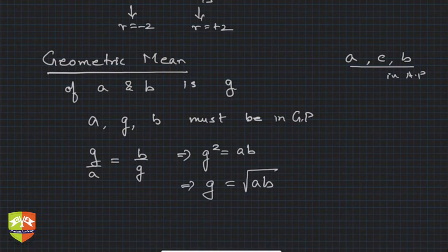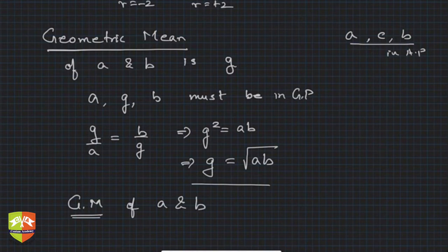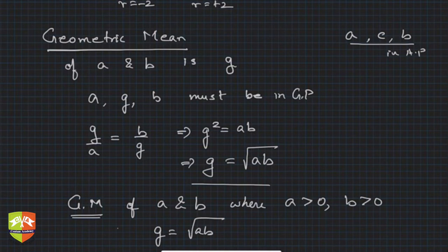Clearly, a and b both have to be either positive or negative. A and b cannot be one positive and one negative — both of them have to be either positive or negative. So the geometric mean of a and b, where a > 0 and b > 0, is GM = √(ab).